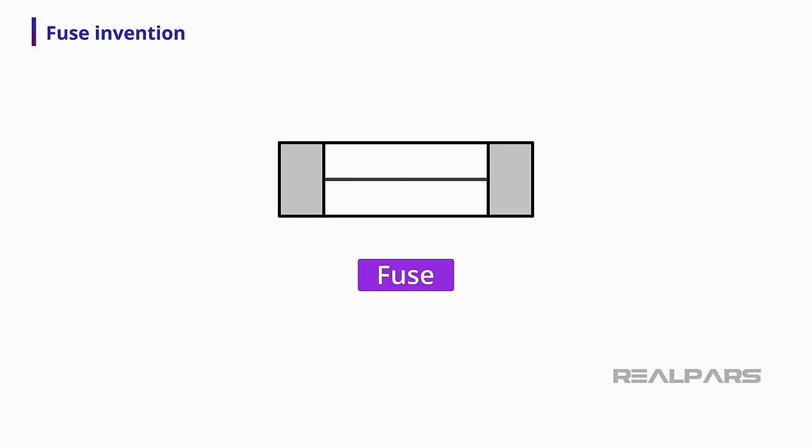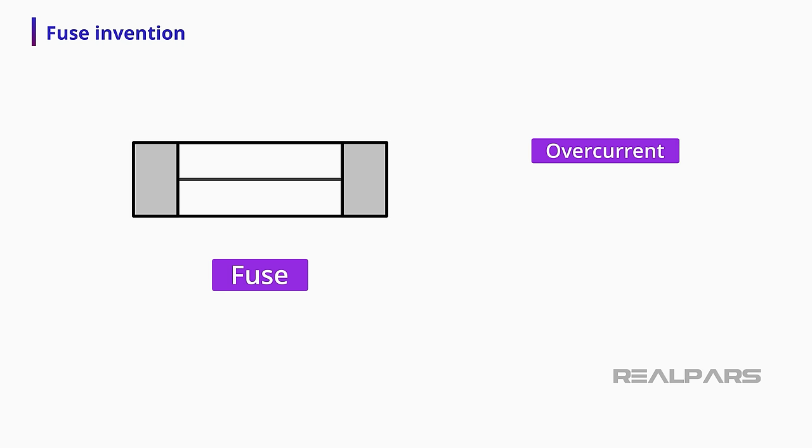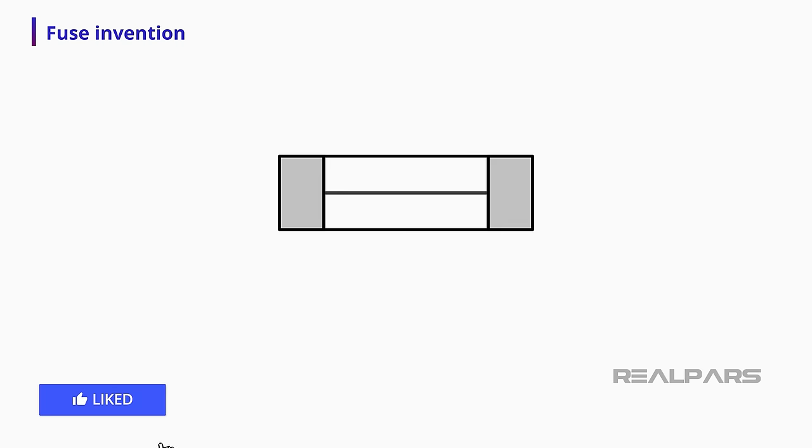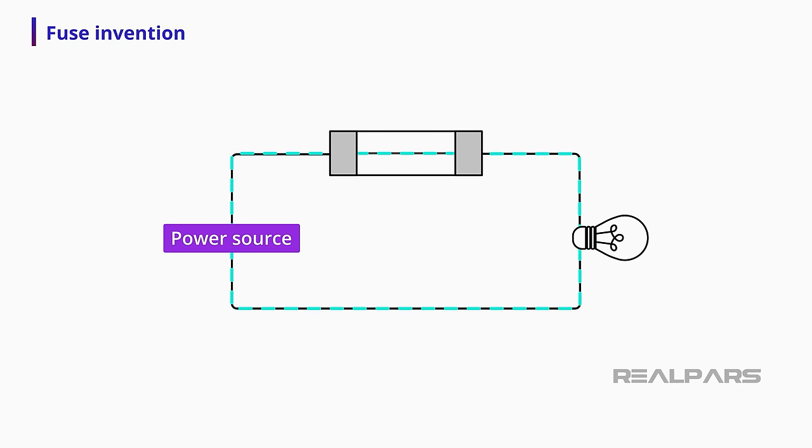A fuse is a safety device used to protect against overcurrent, short circuit, and overload. It consists of a tube with a metal alloy inside, usually lead, which when overloaded heats up and breaks, preventing short circuits.